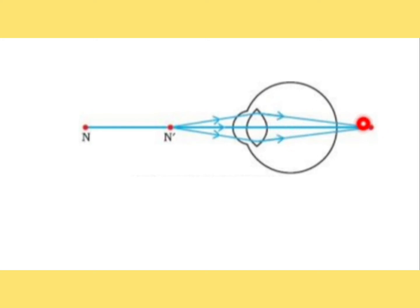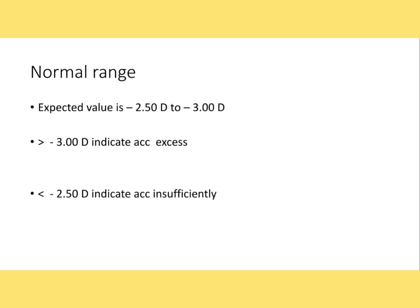The patient must induce accommodation to bring the focus back onto the retina. This is the main purpose of the positive relative accommodation test — to see how much total accommodation can be exerted. The expected normal value is minus 2.50 to minus 3.00. If the PRA value is more than minus 3, it indicates accommodative excess. If the PRA value is less than minus 2.50, it indicates accommodative insufficiency.